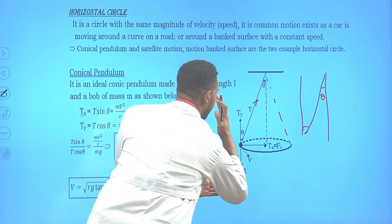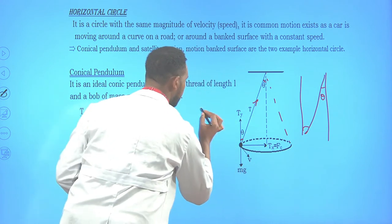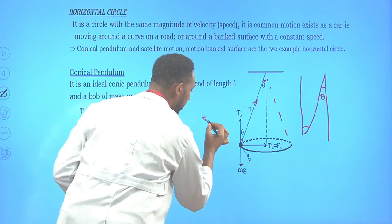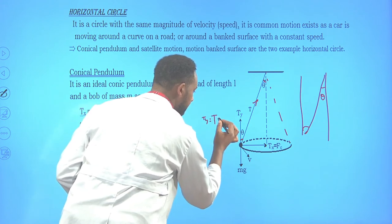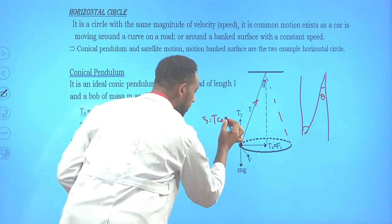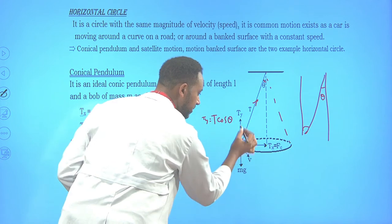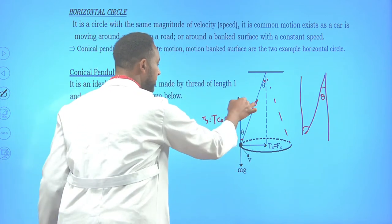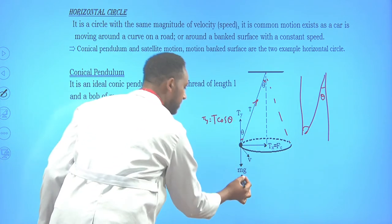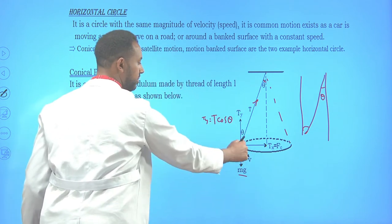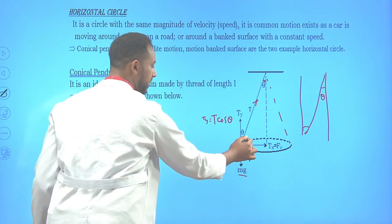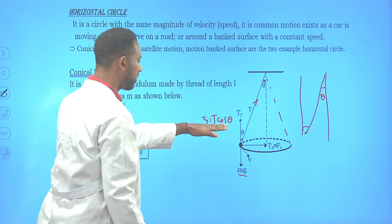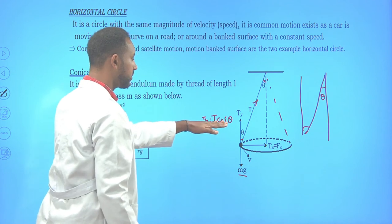By alternate interior angles, the same angle theta appears at both positions. So the vertical component is T_y = T cosθ. The weight Mg equals T cosθ. The object attached has a mass, so the vertical equilibrium gives Mg = T cosθ.